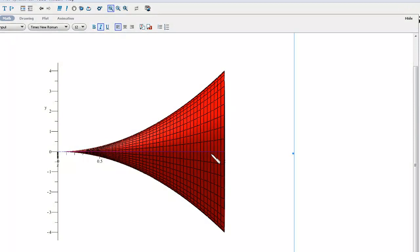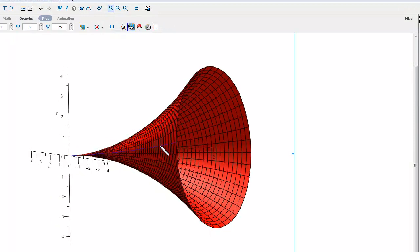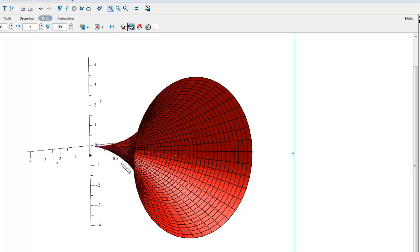So when we move things around, we can see how when the function is rotated about the x-axis, we get a volume.